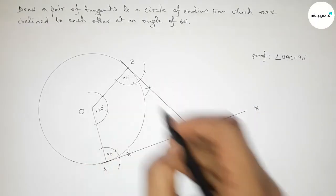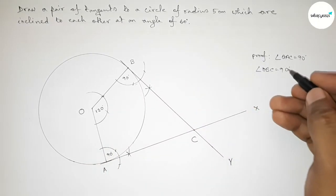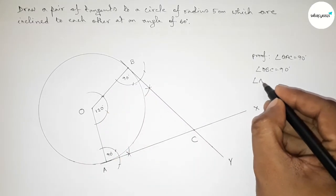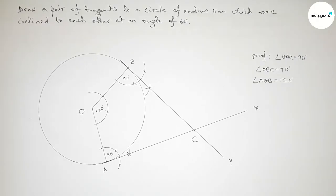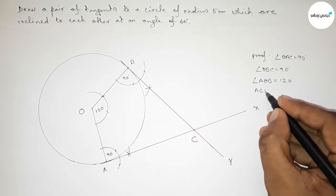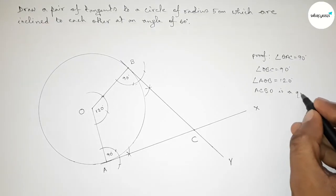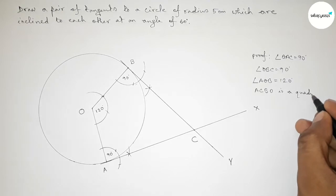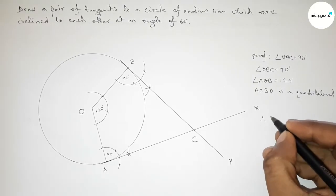Now we have to find angle ACB. Given: angle OAC equals 90 degrees, angle OBC equals 90 degrees, and angle AOB equals 120 degrees. ACBO is a quadrilateral, and we know that the sum of angles of a quadrilateral is 360 degrees.